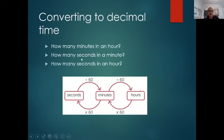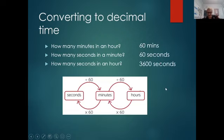Okay, so converting—maybe write this down because it'll be really useful for you. So you know how many minutes there are in an hour? 60. How many seconds are there in a minute? 60. And how many seconds are there in an hour? 3,600. Okay, maybe you didn't know that, but now you do.